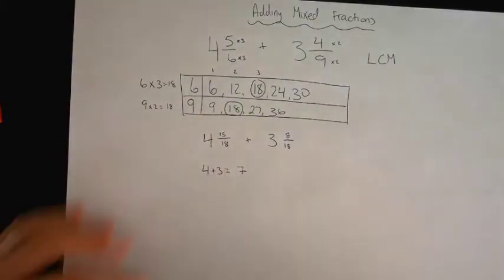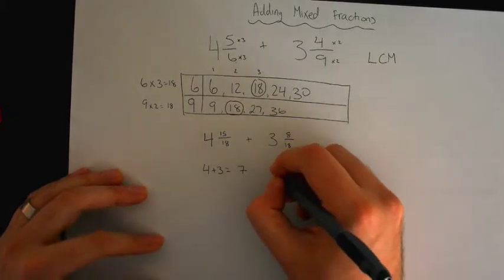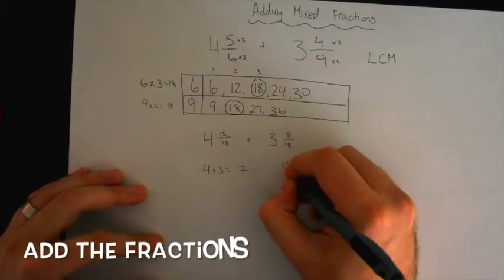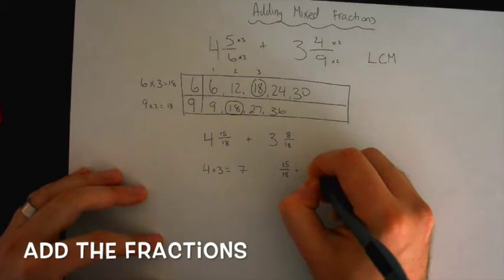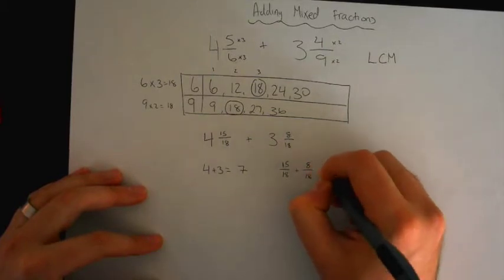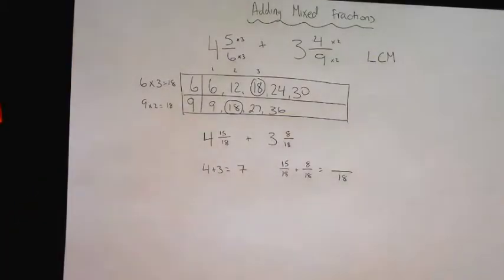And now what do we need to add? Fire. Okay. So now we're going to add 15 over 18 plus 8 over 18. We know the denominator stays the same when we add. What is our numerator now? It's 23.